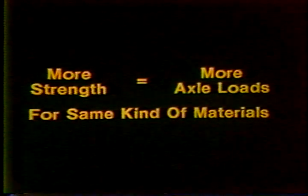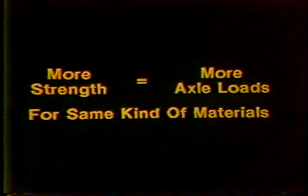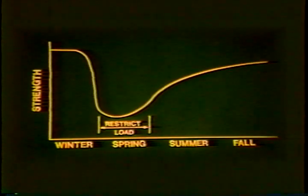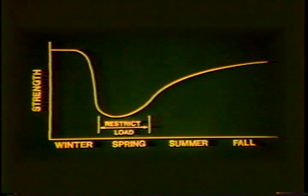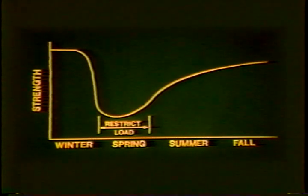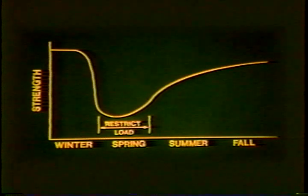The ability of a road to carry loads depends on its strength. The strength is dependent on the thickness of the pavement and the soil under the pavement. In the spring, the ability of a road to carry loads is usually lowest. As the frost leaves in the spring, the soil becomes soft and loses strength and its ability to support the loads. This results in the restrictions for loading we see each spring. Later in the year, the soil gets stronger until it reaches its greatest strength and is able to carry the design loads.